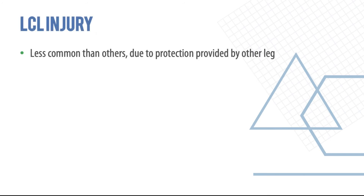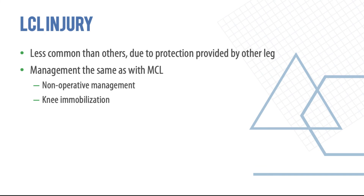MCL injuries can be from a direct blow or as part of combined injuries. These patients are usually treated non-operatively — the knee immobilizer allows the ligament to scar down and it usually heals well. Long-term management is generally non-operative. The LCL is less commonly injured than others as it is protected by the other leg. Management is the same as MCL — non-operative with knee immobilization. Importantly, all these patients should be considered for MRI and ruled out for a posterior lateral corner injury, which in young patients requires posterior lateral corner reconstruction and referral to a sports injury specialist.